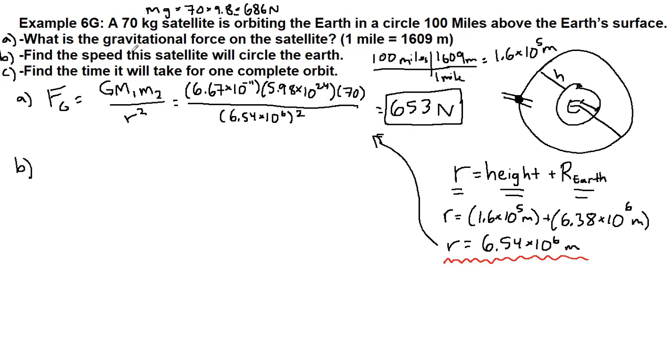So part B is asking us to find the speed this satellite will circle the Earth. Here's where it really helps us recognize that chapter 6 has built a problem-solving process that we want to continue to use. When we have circular motion, the net force acting on the object is equal to mass times the centripetal acceleration.